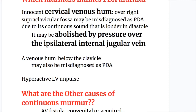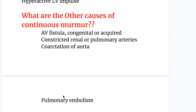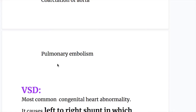A venous hum below the clavicle may also be misdiagnosed as PDA. Other causes of a continuous murmur include: AV fistula (congenital or acquired), constricted renal or pulmonary arteries, coarctation of the aorta, and pulmonary embolism.